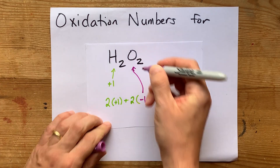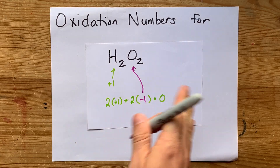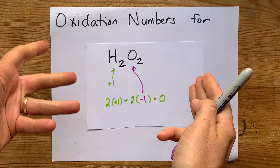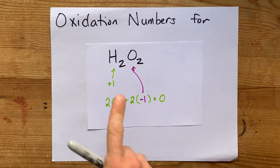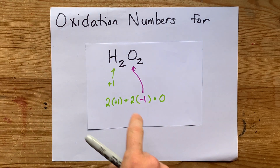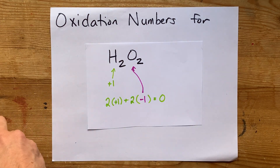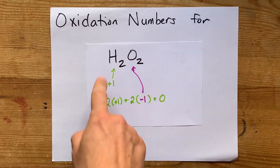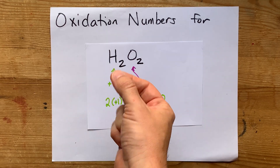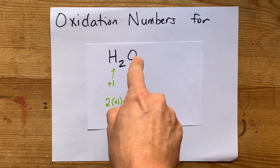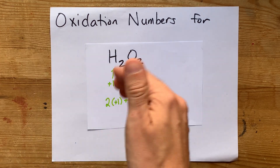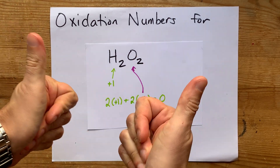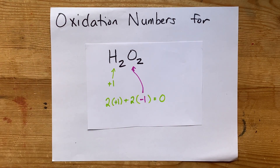Oxygen is almost always minus two for oxidation number. The exception is peroxides, and hydrogen peroxide is one of those examples. Just remember, hydrogen being plus one has a higher priority than oxygen being minus two, even though those are both very common rules. Thanks for being with me, and best of luck.